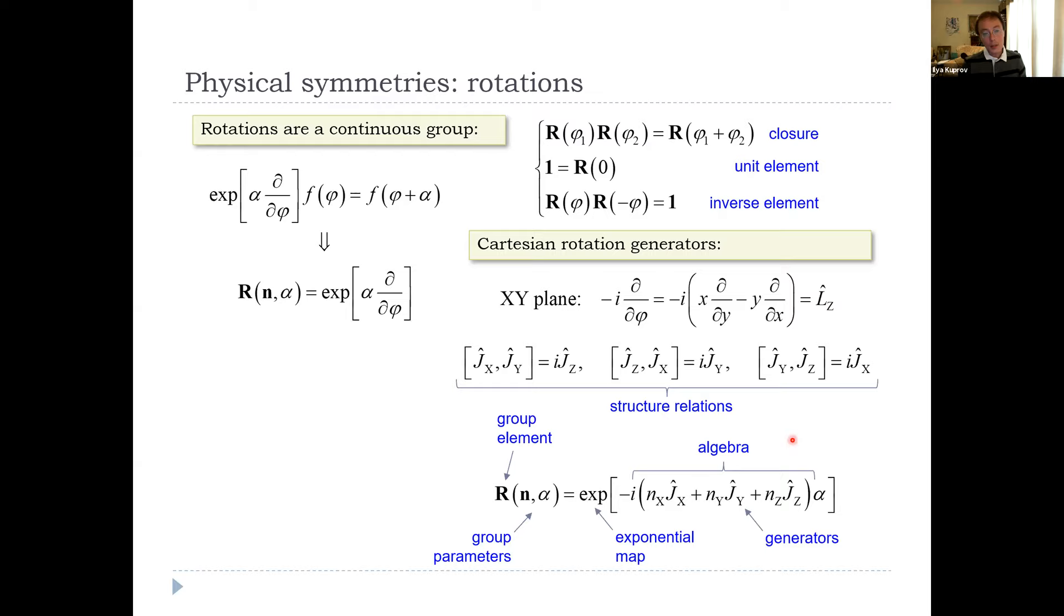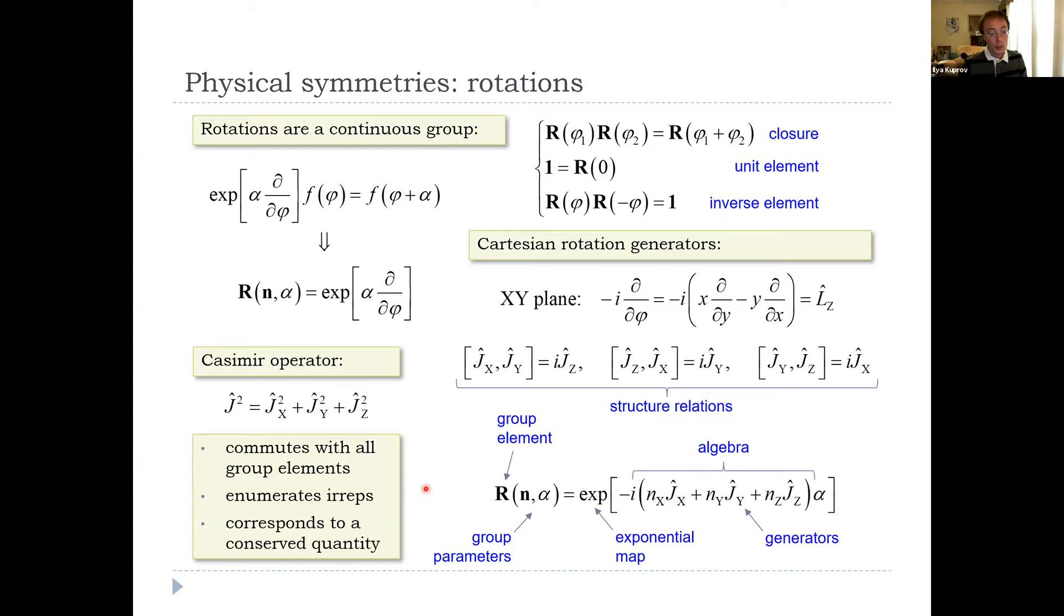So rotation group is a triparametric group, the Euler angles for example, that is generated by the angular momentum operators. These commutation relations are called structure relations of the algebra. Now, one thing that you also know about is for angular momentum, we have an operator that commutes with everything. This is general. The algebra of every continuous group has such operators. They're called Casimir operators. Their function is in fact to commute with everything. They also enumerate irreducible representations. There are multiples of unit matrices in irreps. They correspond to conserved quantities. So the total angular momentum is in fact conserved. The fundamental assumption that we have made here is that reality is isotropic. If you rotate the coordinate system and repeat the experiment, you are guaranteed the same outcome up to that rotation. So orbital angular momentum exists and is conserved just because reality is isotropic. Everything else is unavoidable mathematics.